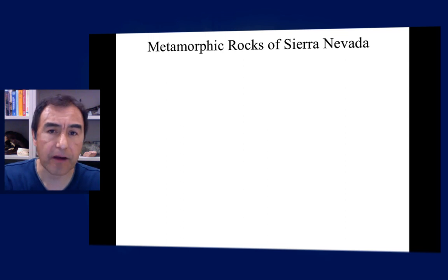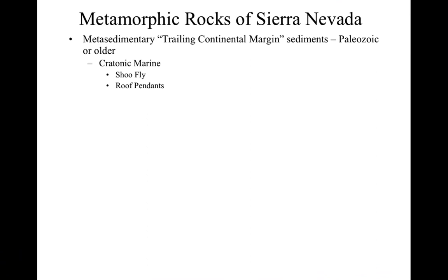The first group of rocks are the cratonic margin rocks — the passive margin sediments, the trailing continental margin sediments. They include the Shoe Fly complex and the metamorphic roof pendants of the high Sierra. Looking through the metamorphic rocks in the Sierra Nevada, you find rocks essentially equivalent to the Johnnie quartzite, the Noonday dolomite, the Ibex formation, the Wood Canyon formation, and the Sterling quartzite — all those formations we talked about in Death Valley.